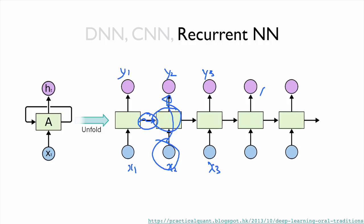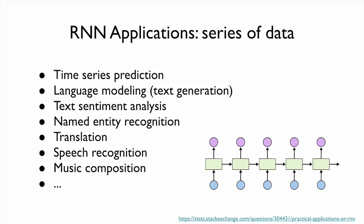For any given cell, the input is some sort of x input, but also we get some previous hidden states as input, and they can produce a hidden output. Because of this, we can sort of memorize all previous states and use this to produce the next hidden state.